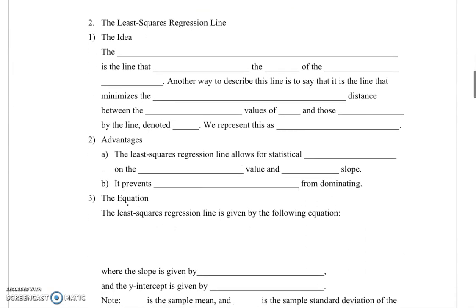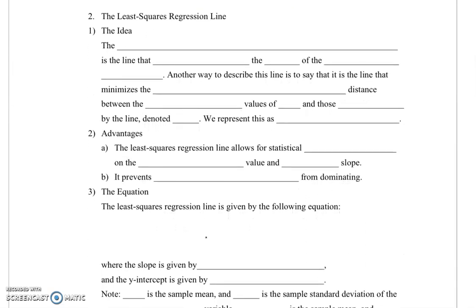So the idea behind the least squares regression line is this: the least squares regression line is the line that minimizes the sum of the squared residuals.